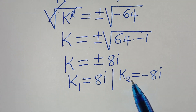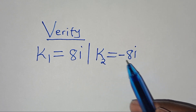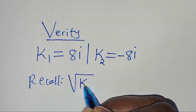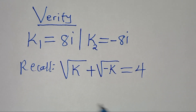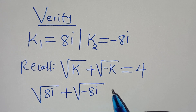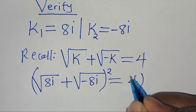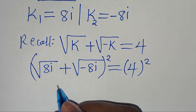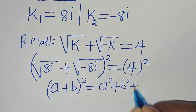The next step is to verify that k₁ and k₂ satisfy the original equation: the square root of k plus the square root of minus k equals 4. Starting with k₁ equals 8i: we have the square root of 8i plus the square root of minus 8i equals 4. Squaring both sides, the left side is in the form (a + b)², which expands as a² + b² + 2ab.